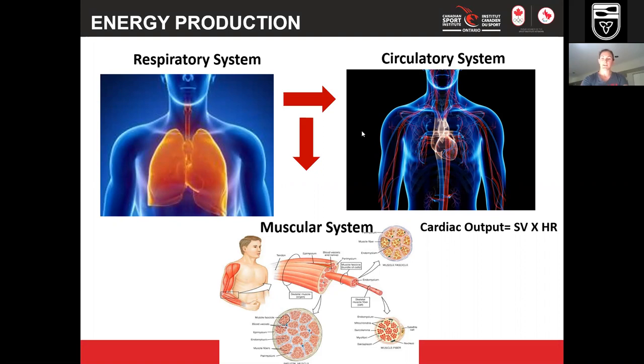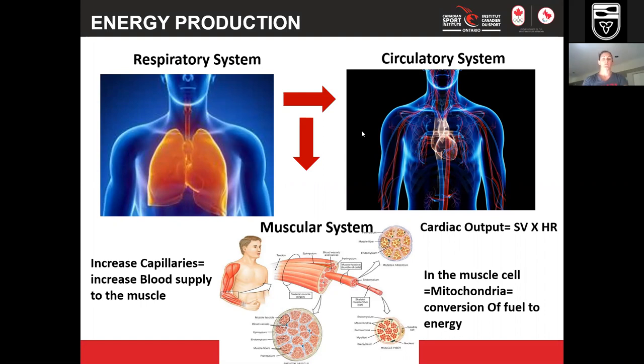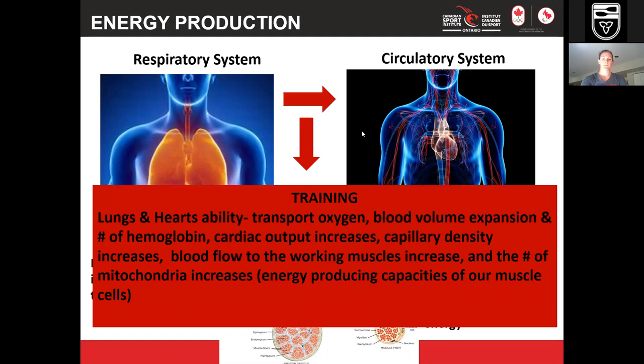At the muscular level, capillaries surround the muscle fibers — the higher the capillary count, the greater the oxygen-carrying capacity into those muscles and into the mitochondria, where our energy is produced. To recap: an increase in capillaries means increased blood supply to muscles, and an increase in mitochondria means more efficient fuel conversion into energy.